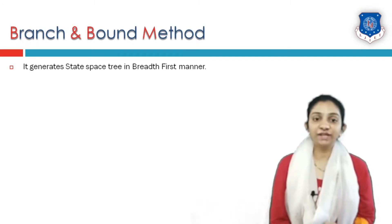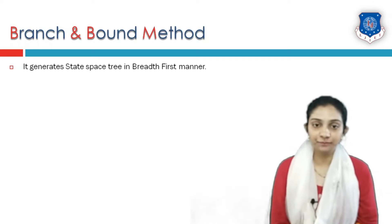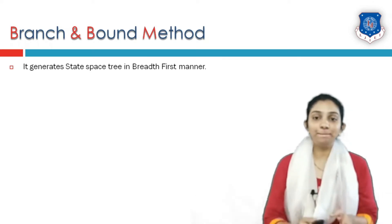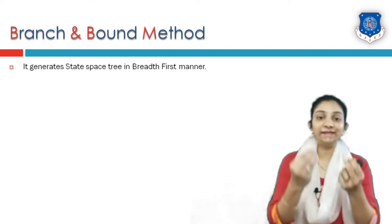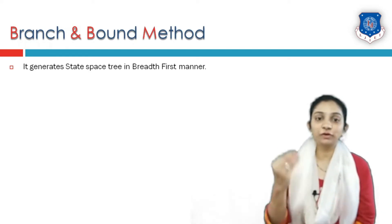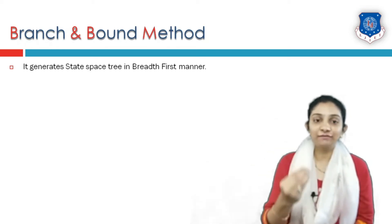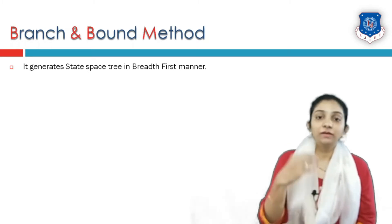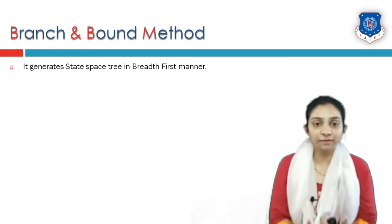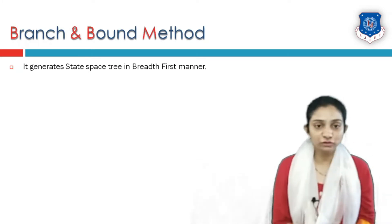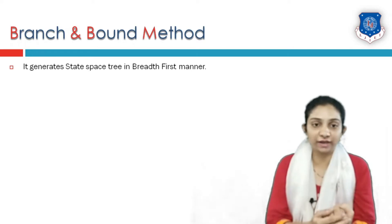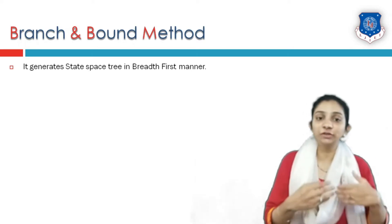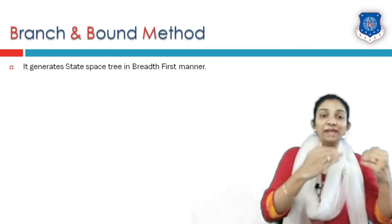Branch and bound method generates a state space tree just like backtracking, but the generation of the tree here is in DFS manner or breadth first manner. In backtracking, the tree was generated in a depth first manner — for a given node we generate its child first, and from that child we generate possible children. But here in branch and bound, for a given node all possible children are first generated, and then a decision is taken from which node we are going to expand the tree to the next level.